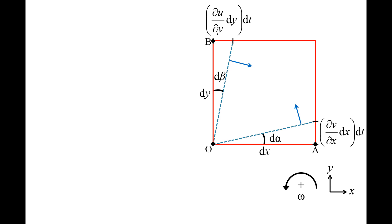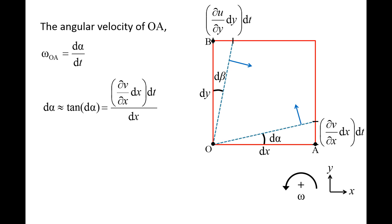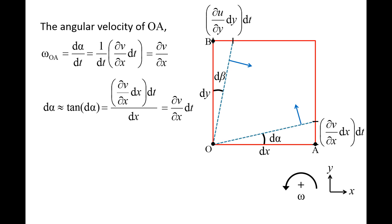We will use the symbol lowercase omega to denote angular velocity and define the counter-clockwise direction as positive. The angular velocity of side OA is equal to the time rate of change of angle d alpha. Since dt is very small, d alpha will be small as well, and for very small angles the tangent of the angle is approximately equal to the angle itself. The tangent of d alpha equals partial v partial x dx dt divided by dx. The dx's cancel out, giving partial v partial x dt. Plugging this into the equation for omega OA and canceling the dt's, the angular velocity of side OA is partial v partial x.